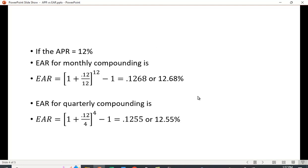Let's take a look at a couple of examples. If the APR is 12% and it's compounded monthly, the EAR is 1 plus 0.12 divided by 12, raised to the 12th power, minus 1, which equals 0.1268 or 12.68%. For quarterly compounding, the EAR is 1 plus 0.12 divided by 4, raised to the 4th power, minus 1, which equals 0.1255 or 12.55%.